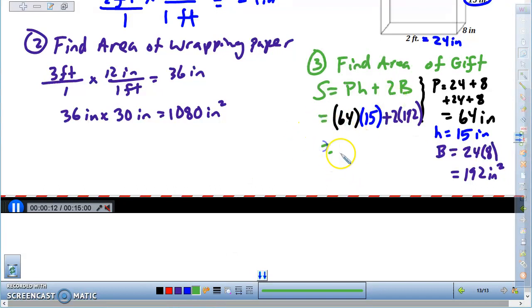64 times 15 gives you 960 square inches, and I'm going to add that to 2 times 192, which is 384 square inches, which gives us a grand total of 1,344 square inches.